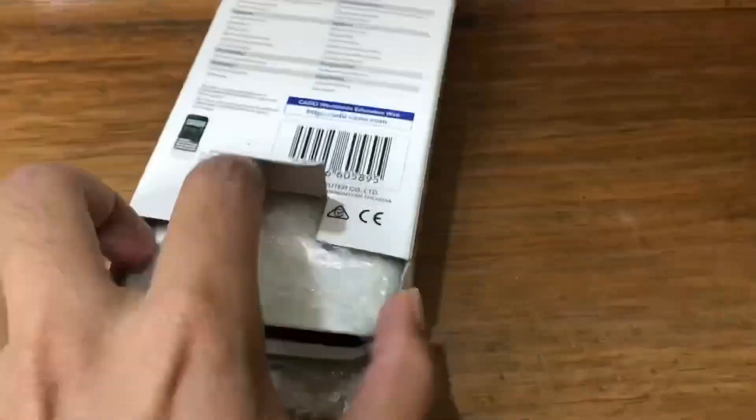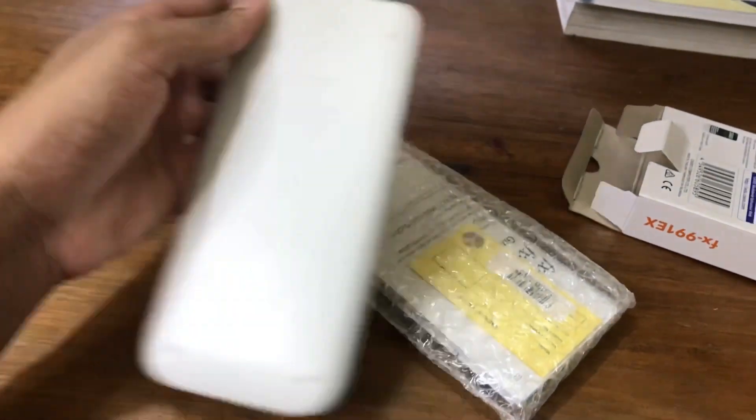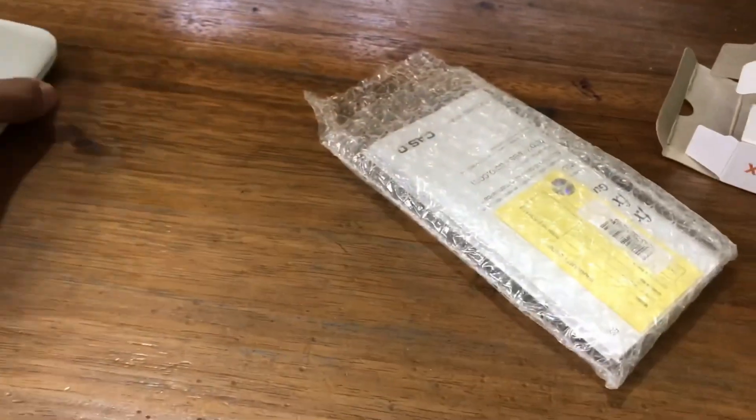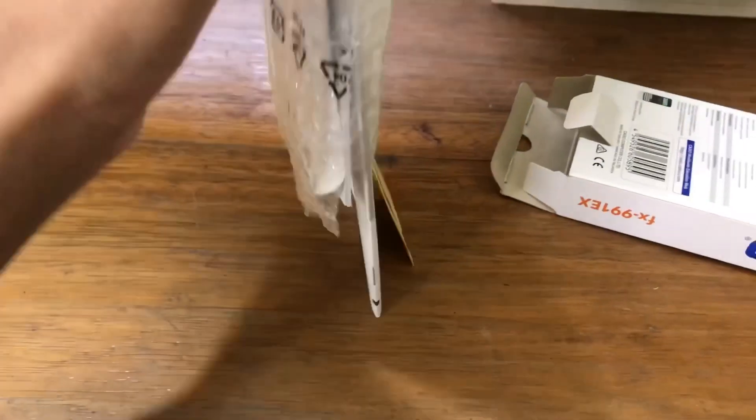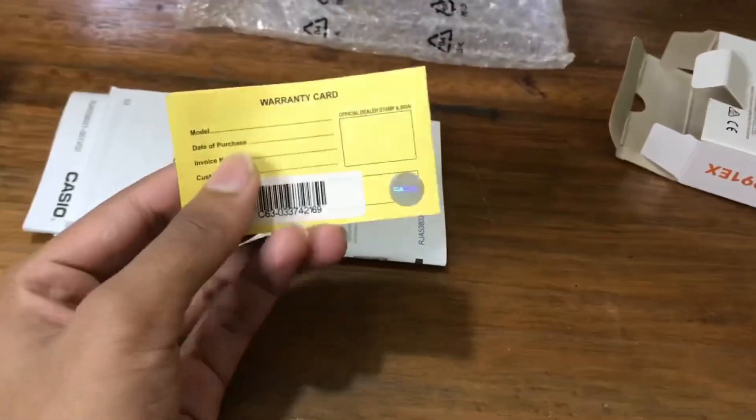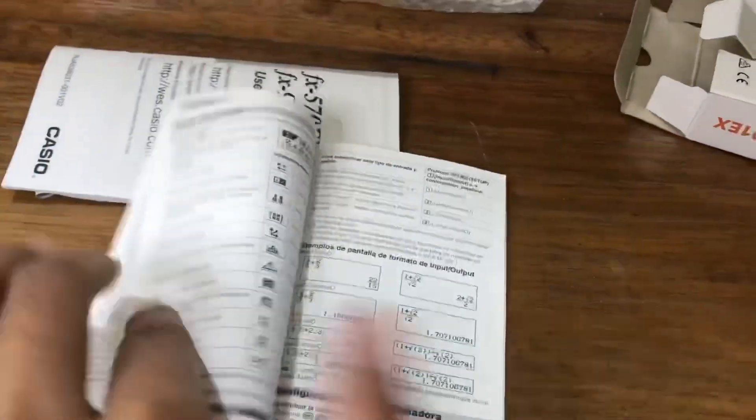Here we can see some bubble wrap paper, and here is our calculator. In the bubble wrap there is a warranty card and manuals in different languages. We'll keep those aside.